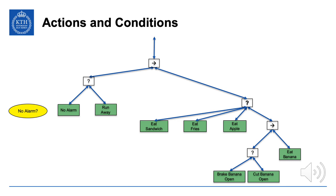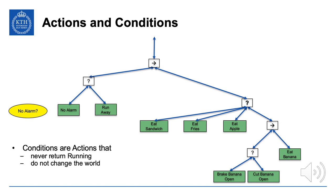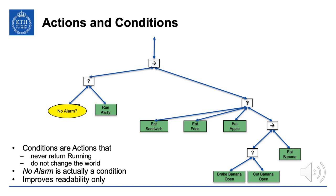Before concluding, we note the difference between actions and conditions. So far we've dealt with actions — the green boxes: eat fries, open a banana, run away, and so on. One of those boxes — no alarm — is actually a condition rather than an action. A condition is a special case: it's an action that never returns running and does not change the world. We draw conditions with ovals instead of rectangles to improve readability. To draw the tree properly, no alarm should be shown as an oval.